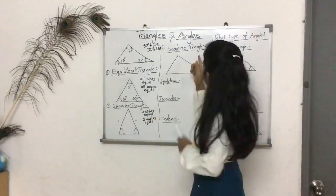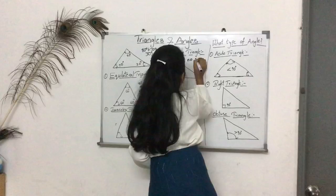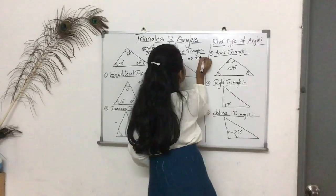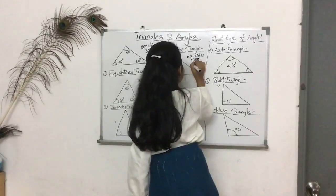And finally, this is the scalene triangle. This has no sides equal and no angles equal.